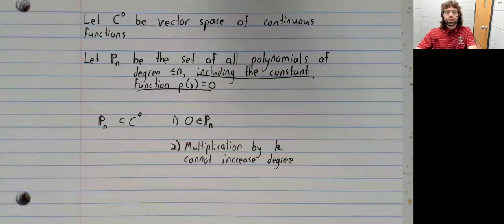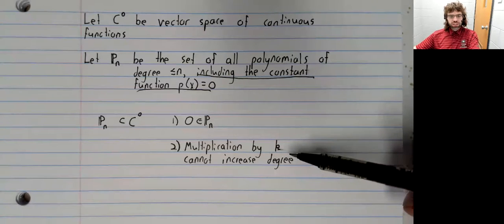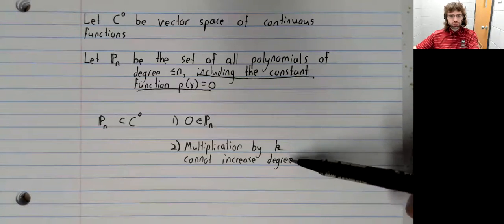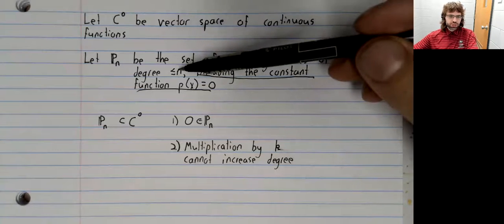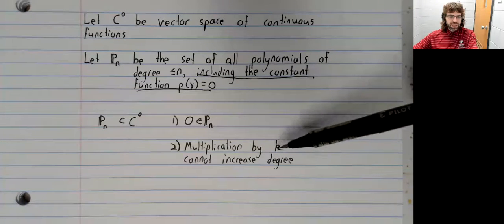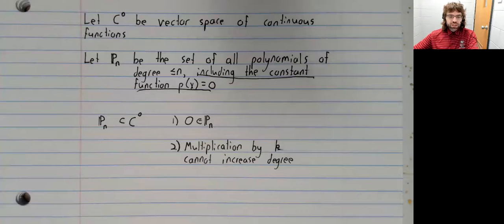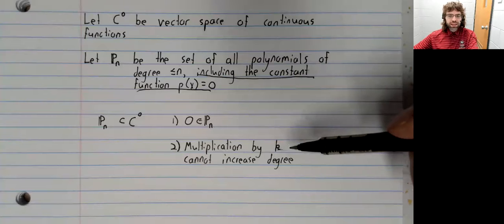It's closed under scalar multiplication. A constant times a polynomial certainly is a polynomial, and multiplication by a constant can't increase the degree. So if the degree was less than or equal to n originally, and you multiply by k, then the degree is still less than or equal to n. In fact, the only way multiplication by k can change the degree is if k is zero.